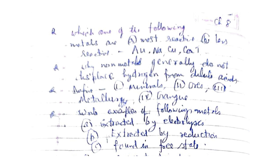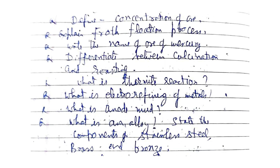Define minerals, ores, metallurgy, and gangue. Write examples of metals: (a) extracted by electrolysis, (b) extracted by reduction, (c) found in the free state. Define concentration of ore. Explain the froth flotation process. Write the name of the ore of mercury. Differentiate between calcination and roasting. What is the thermite reaction?